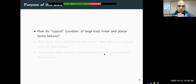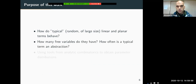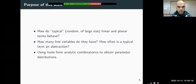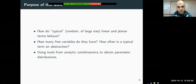The purpose of this work is to understand how typical large-size linear and planar terms behave. Natural questions include: how many free variables do they have, and how often is a typical term an abstraction versus an application? The goal is also to use and develop new tools from analytic combinatorics to obtain parameter distributions that help elucidate how these typical linear and planar terms behave.